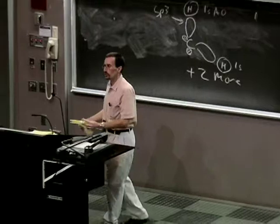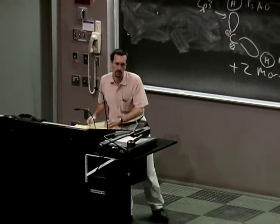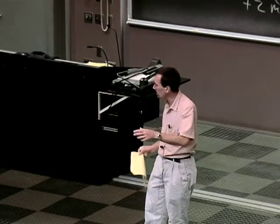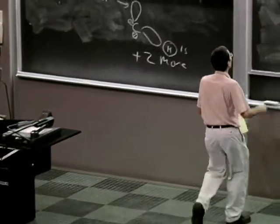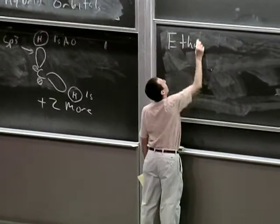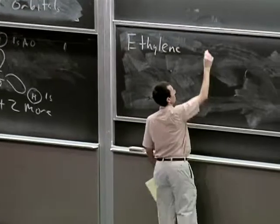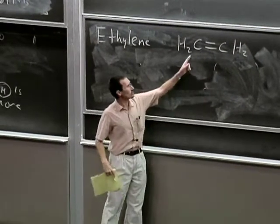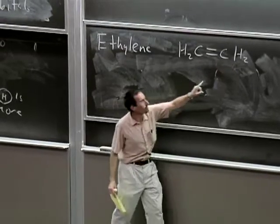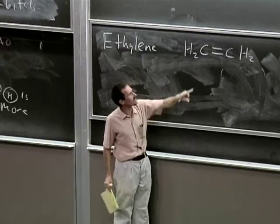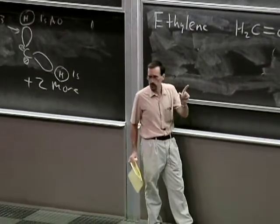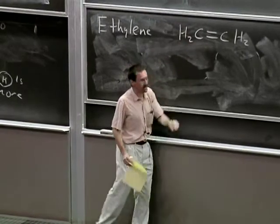Let's turn our attention to a second organic molecule — these are archetypes of the types of structure and bonding you're going to encounter. Let's look at ethylene, CH₂=CH₂. Most organic chemists write this as CH₂ double bond CH₂. Implicit in such a drawing is that the hydrogens are on the outside but aren't participating in the pi bonding.